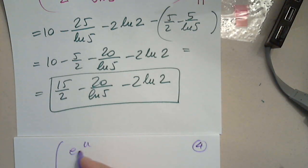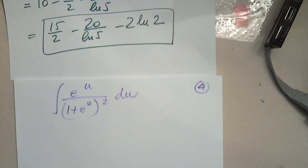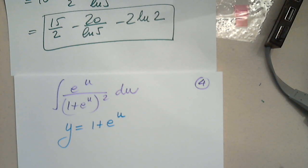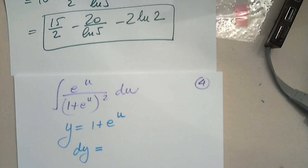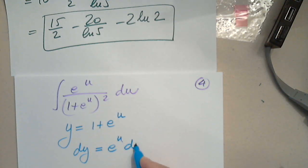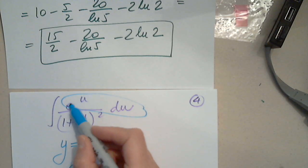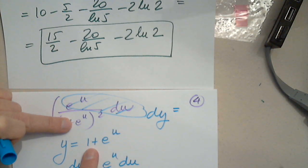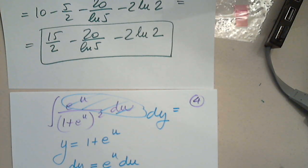Now the integral of e to the u over 1 plus e to the u squared du. It's an indefinite integral. I'll use a substitution: let y equal 1 plus e to the u, as long as dy is in the problem. Remember, dy is not the derivative — it's the differential, which is the function prime times du. So dy equals e to the u times du. This gives me 1 over y squared dy.